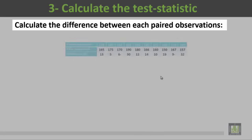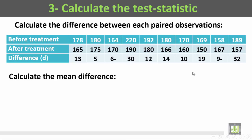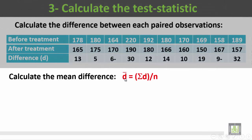These are the observations: 178 kilograms before treatment and 165 kilograms after treatment, so the difference is 13 kilograms. 180 before, 175 after — the difference is 5 kilograms. 164 before treatment and 170 after treatment — the difference is minus 6. And so on till the last patient, who had a weight of 189 before treatment and 157 after treatment, with a difference of 32 kilograms.